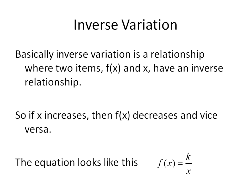Let's look at some examples of inverse variation. Basically we have two variables, f(x) and x. They have an inverse relationship, or they vary inversely to each other. If x increases, f(x) decreases, and vice versa. Here is the equation for inverse variation: the function of x equals our constant divided by x.